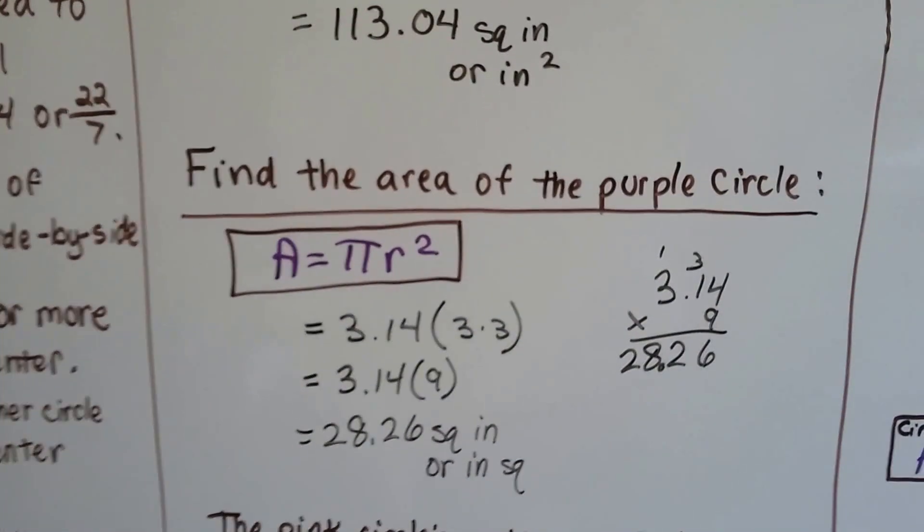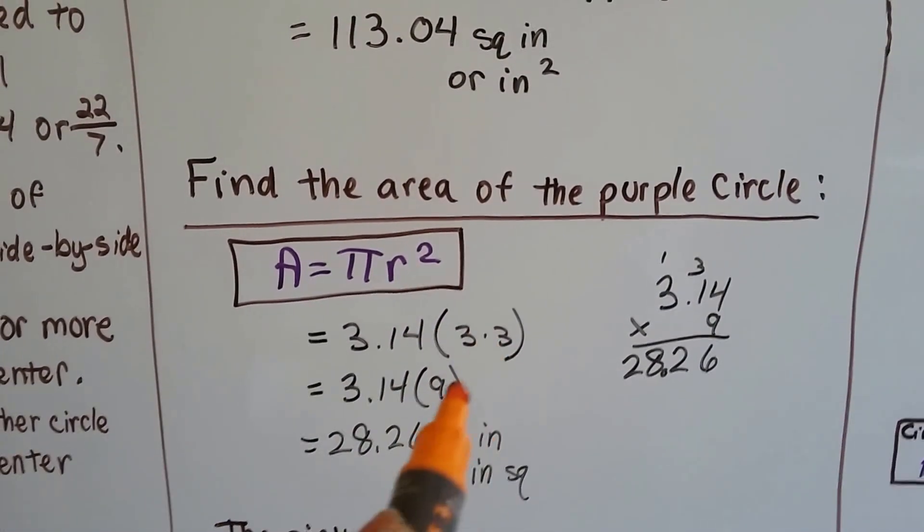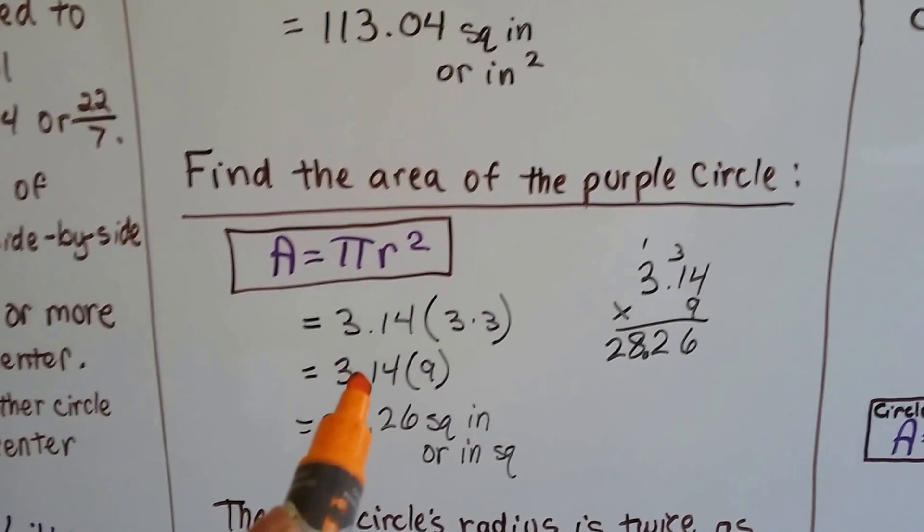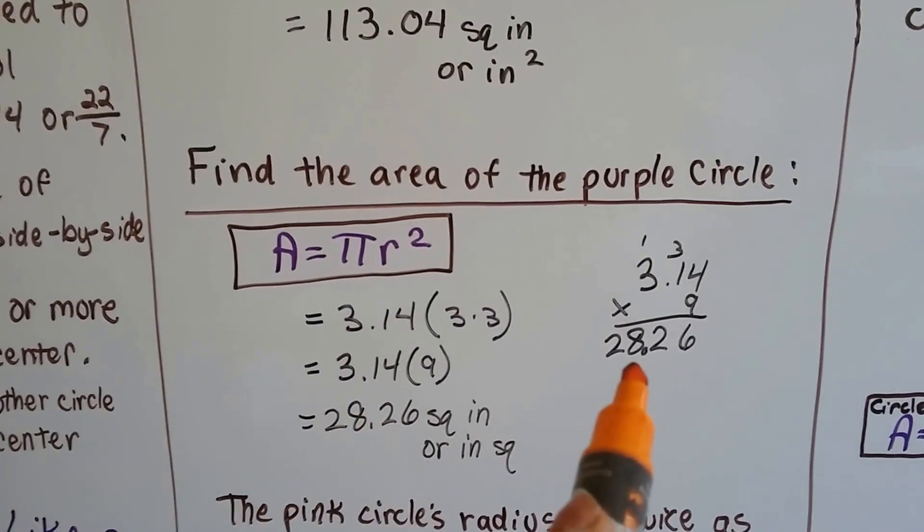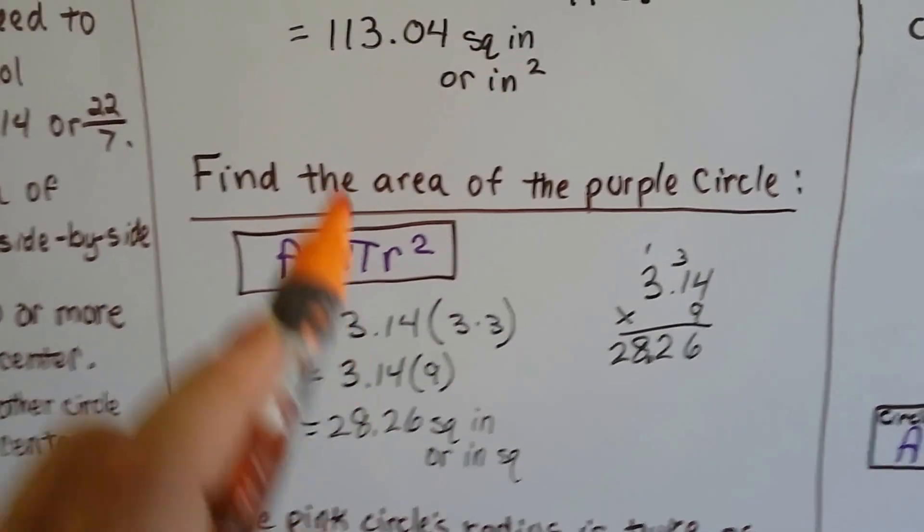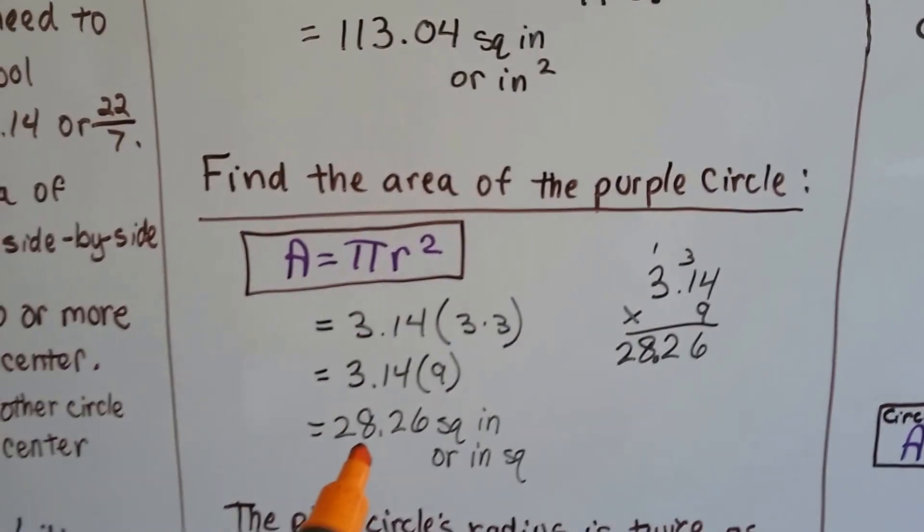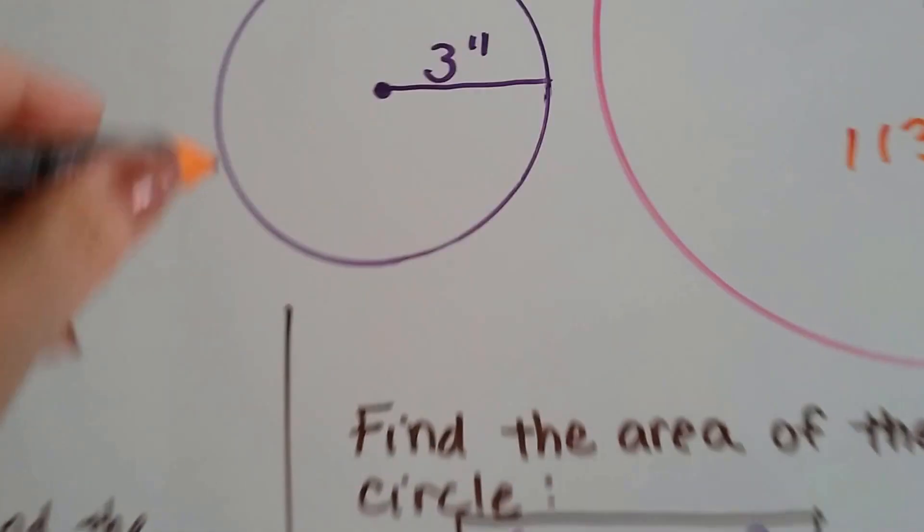So now we're going to find the area of the purple circle. It's got a 3-inch radius, so 3 times 3 is 9. We multiply that by pi, 3.14, and get 28.26. Wow, that's a lot smaller than 113.